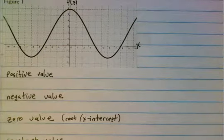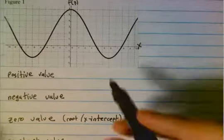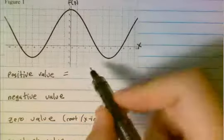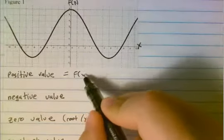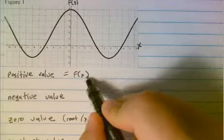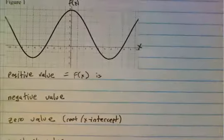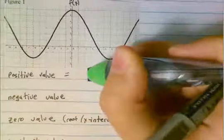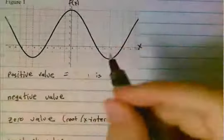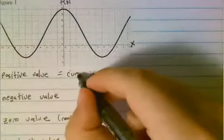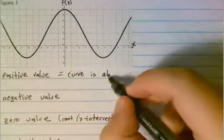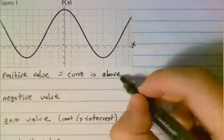Let's go ahead and fill these in together to make sure you got everything. A positive value simply means that the curve is above the x-axis.